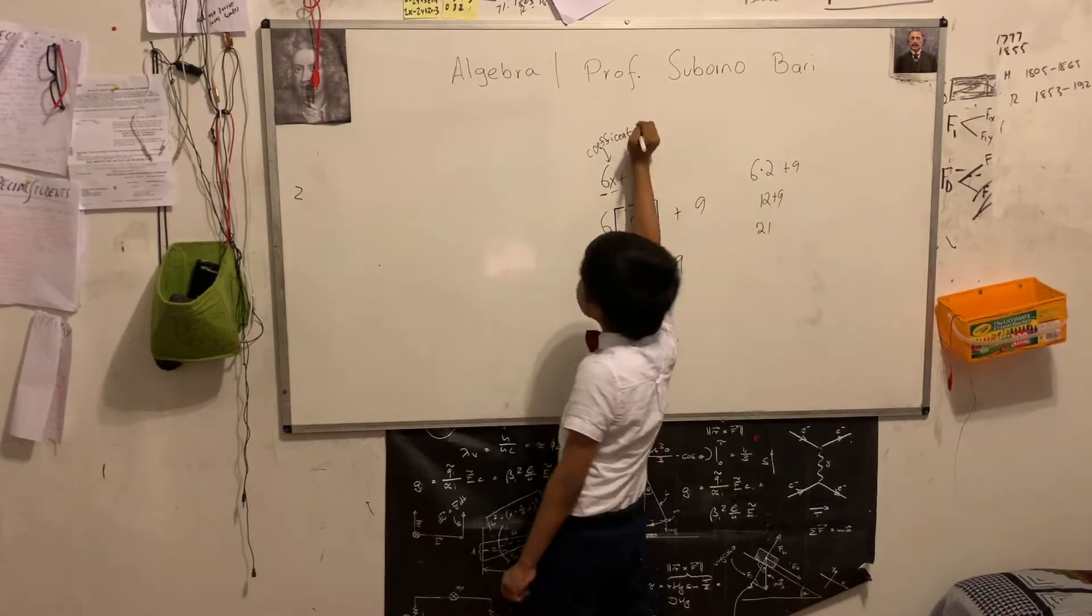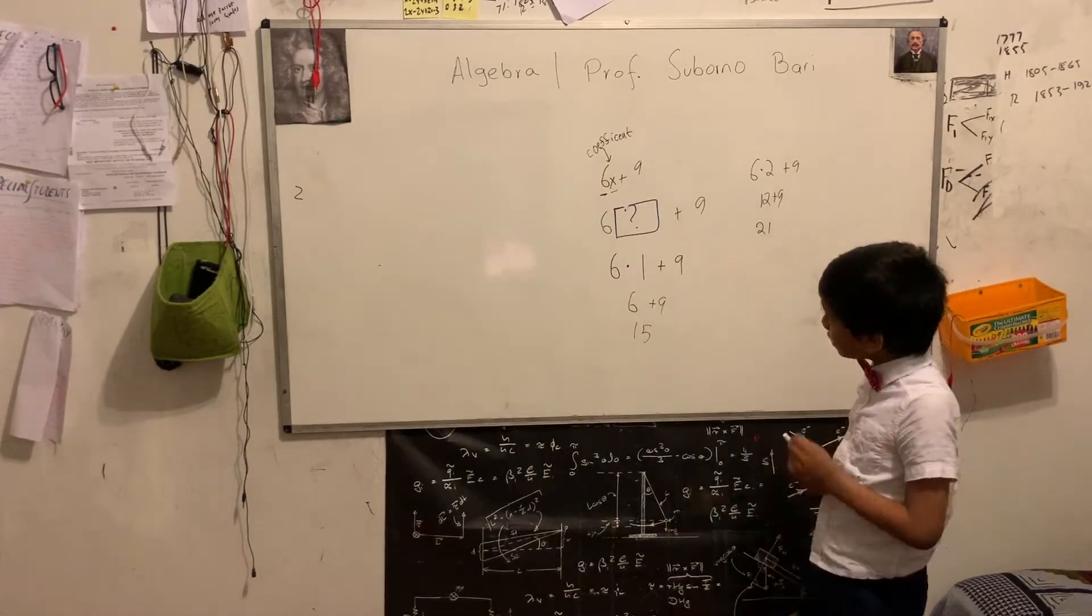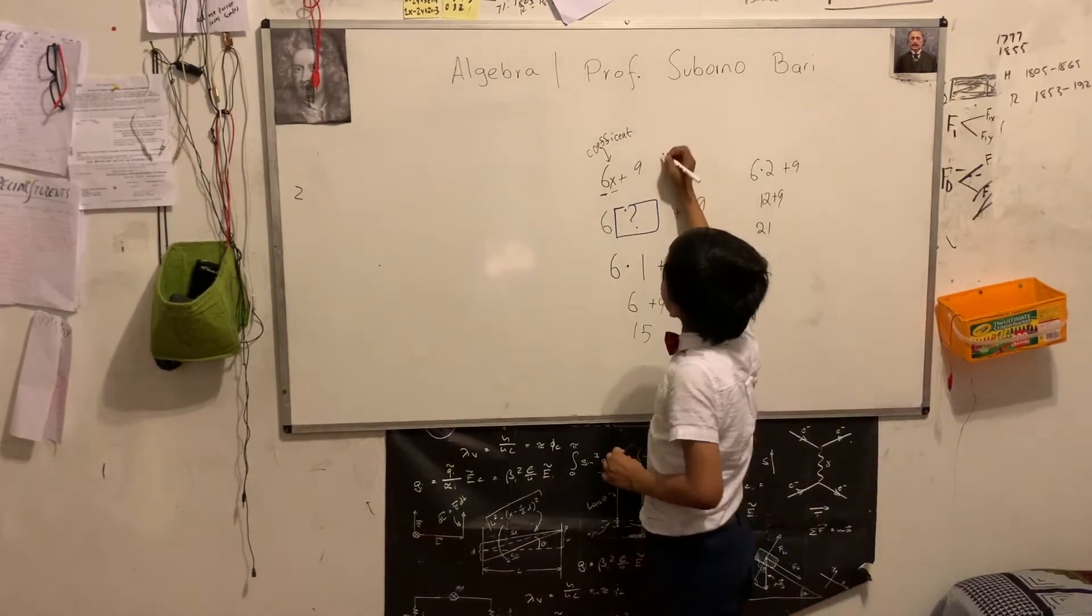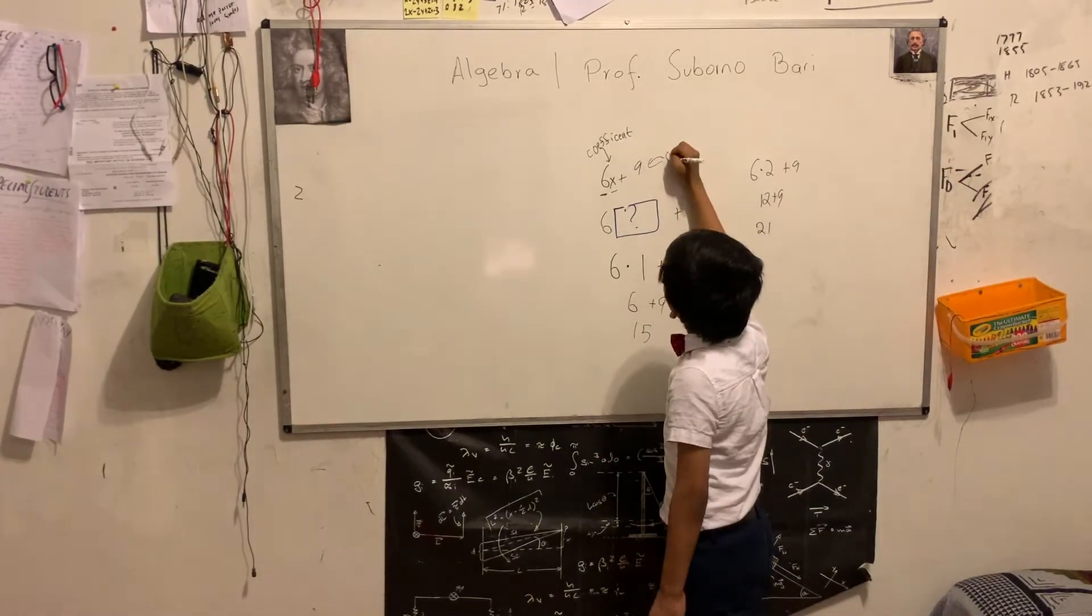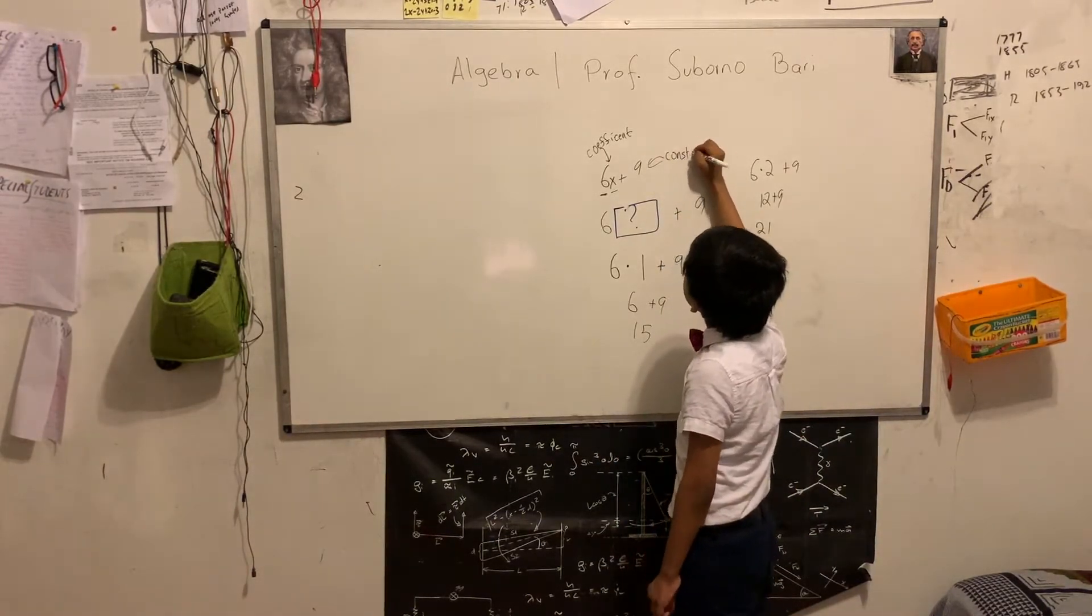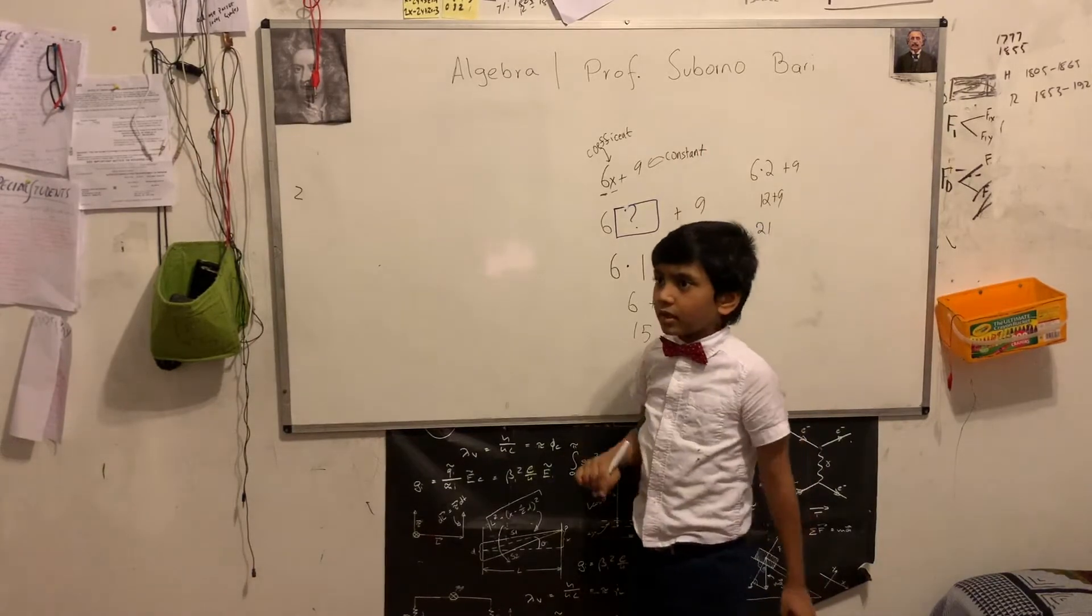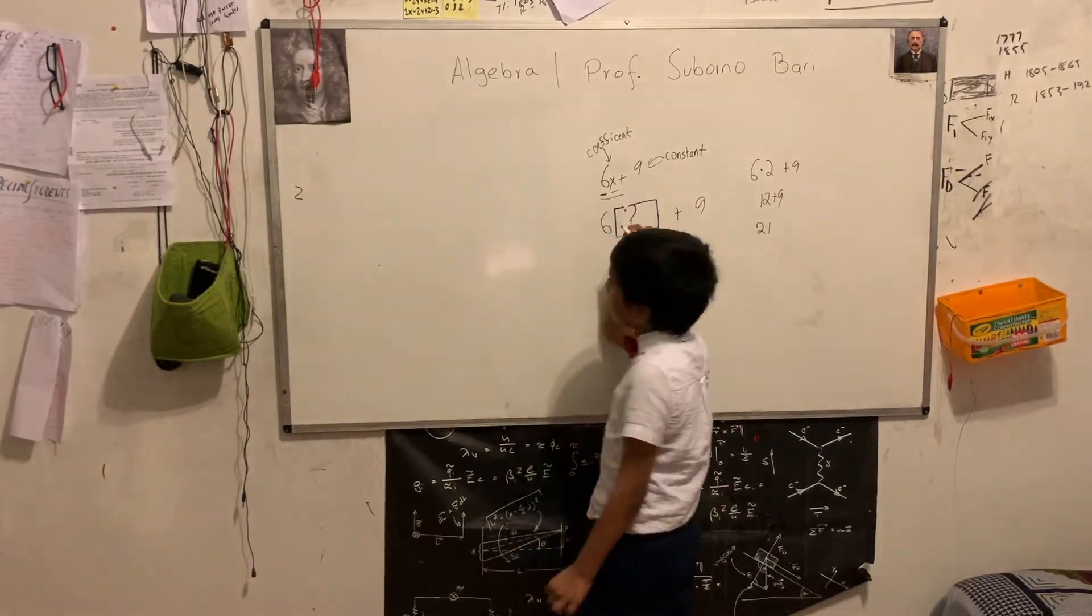It's like connected to it. Coefficient. I think it's really like that. Coefficient. And since 9 is not affected by x, we just call it a constant. It's always constant. It stays the same. It never varies.